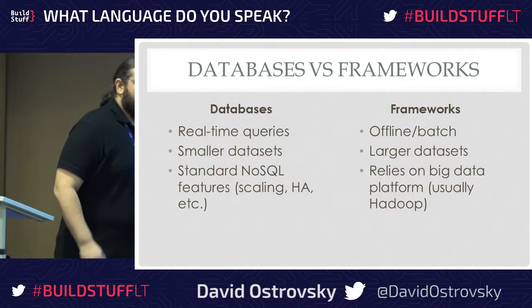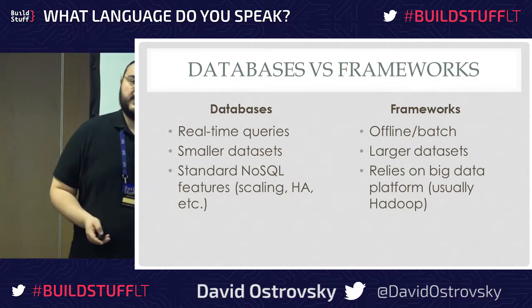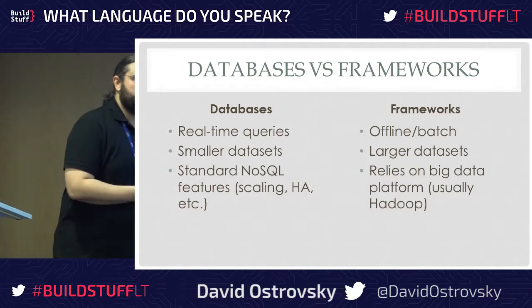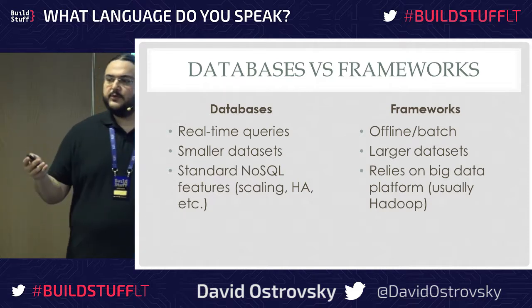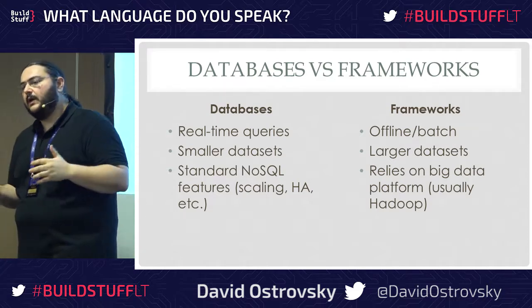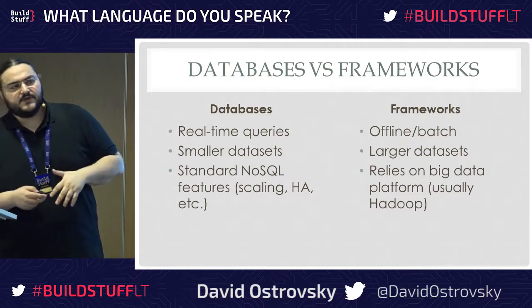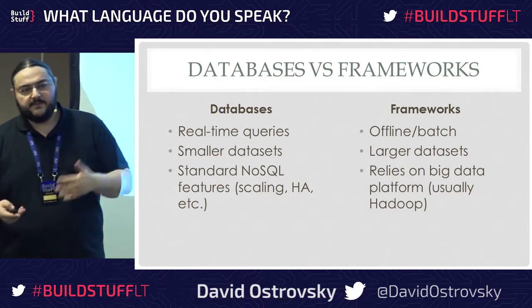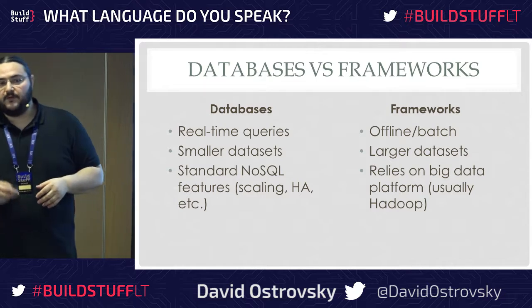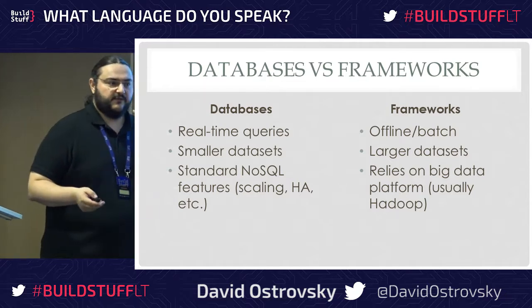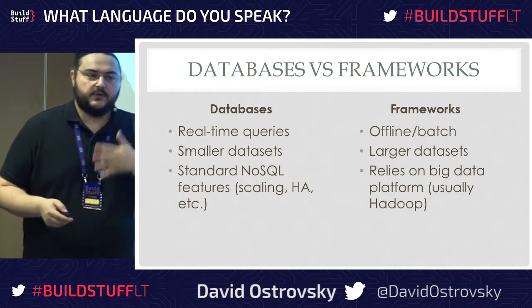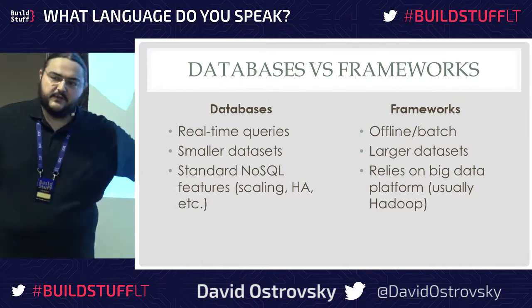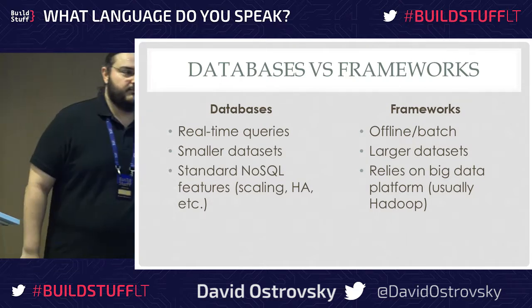One important thing: there are also graph processing frameworks, not just databases. For example, Facebook's social graph has over a billion users and over a trillion connections — there's no practical way to put that in a database. They use a framework called Giraph, which runs on top of Hadoop and does offline, very slow but massive processing across hundreds of machines to process the graph, get results, and cache them elsewhere. Very interesting, but not what we're covering today.